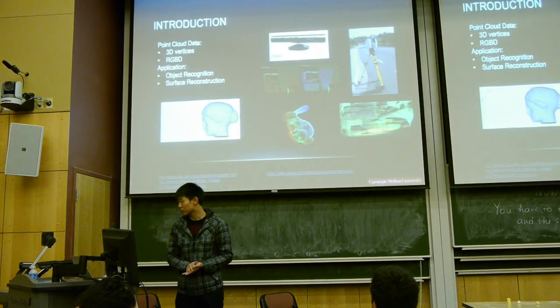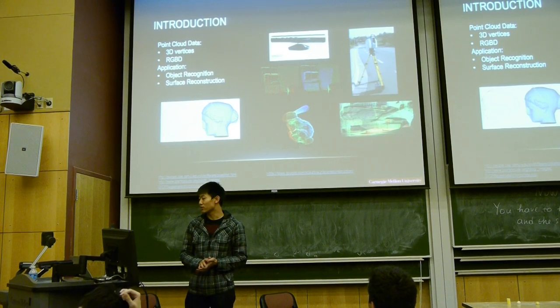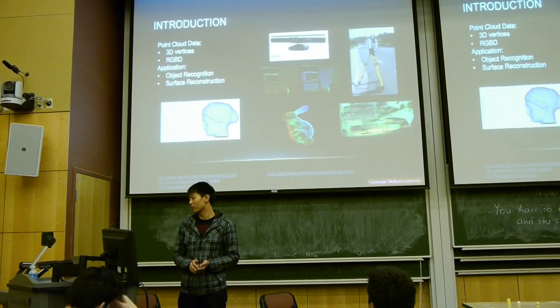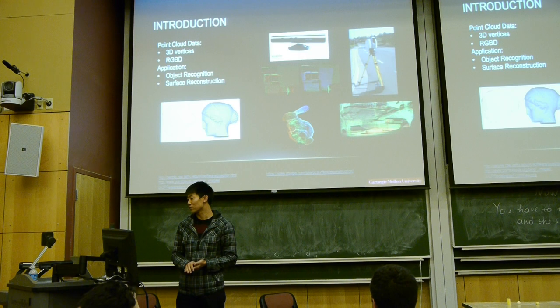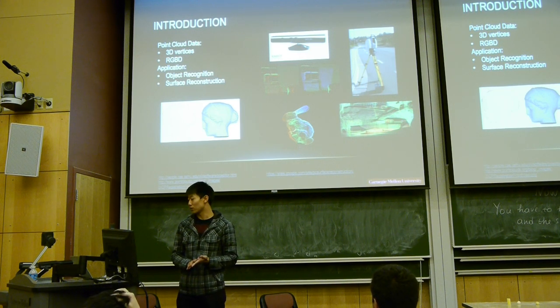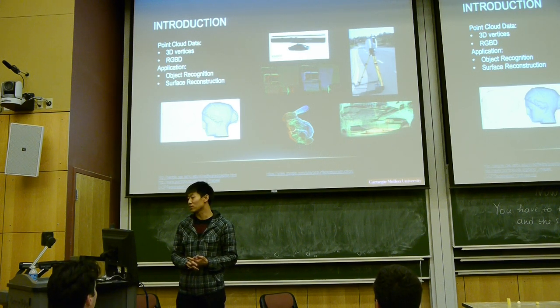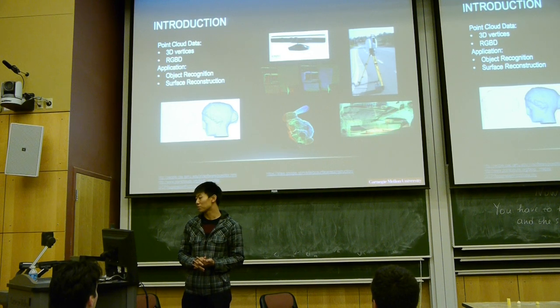I'll briefly introduce the background information. Point cloud data is a set of vertices in a 3D coordinate system, and usually it possesses the XYZ values and sometimes the RGB values.